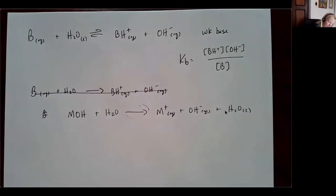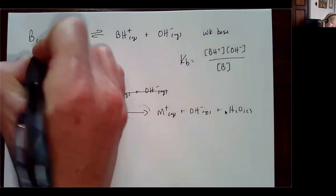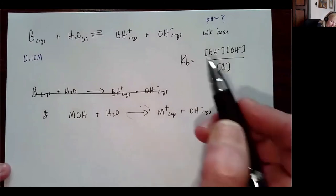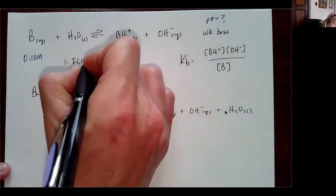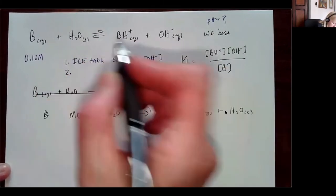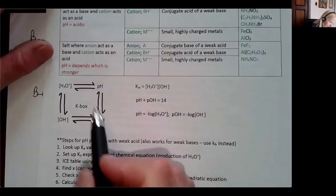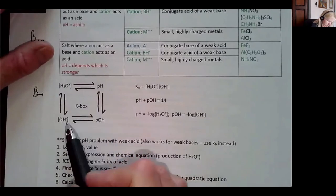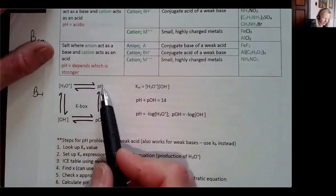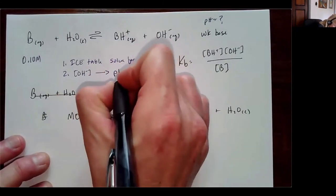For calculating pH from Kb: say I have a weak base at 0.01 molar and I want to know the pH. I'm going to set up an ICE table and solve for hydroxide ion concentration. Once I have [OH⁻], I'll use the K-box — I can either go from [OH⁻] to pOH to pH, or find [H₃O⁺] and get to pH that way. There are two routes.